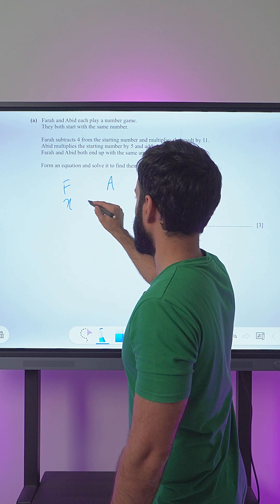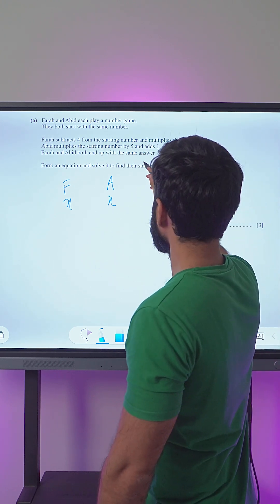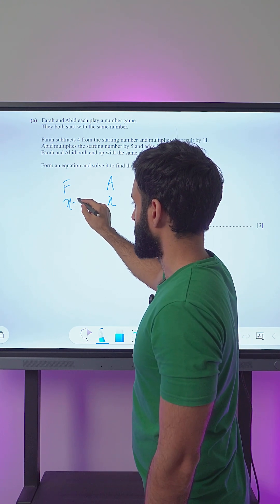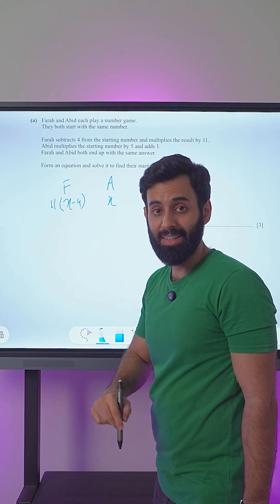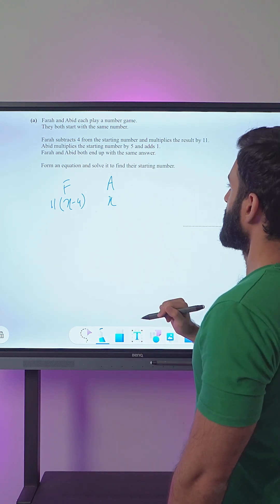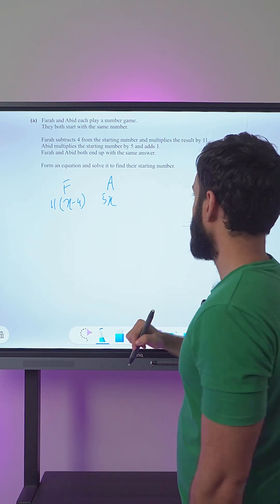So x here, x here. Farah subtracts 4 from the starting number and multiplies the result by 11. So that means this is what she does: she subtracts 4, and whatever the result is, she multiplies by 11. Abid multiplies the starting number by 5, so that means he does x times 5.